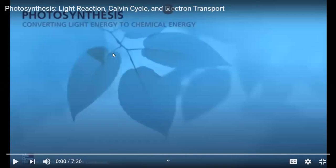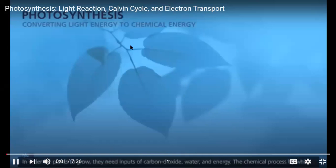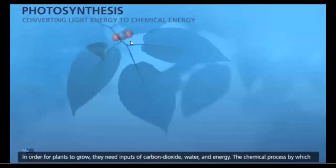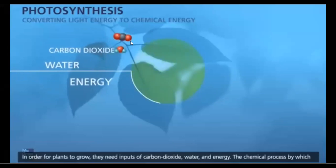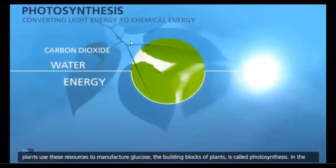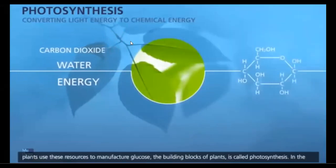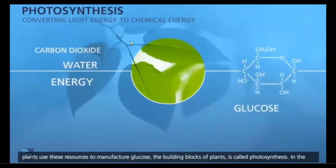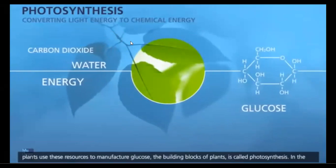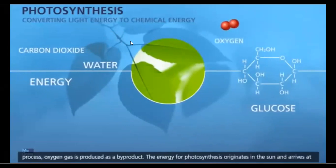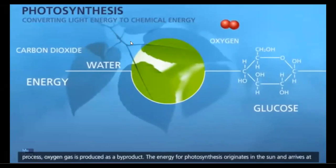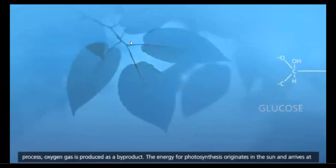In order for plants to grow, they need inputs of carbon dioxide, water, and energy. The chemical process by which plants use these resources to manufacture glucose — the building blocks of plants — is called photosynthesis. In the process, oxygen gas is produced as a byproduct. The energy for photosynthesis originates in the sun and arrives at the Earth as sunlight.